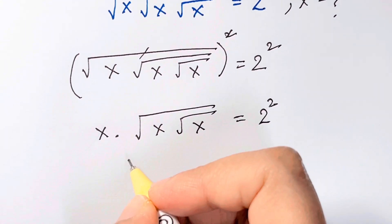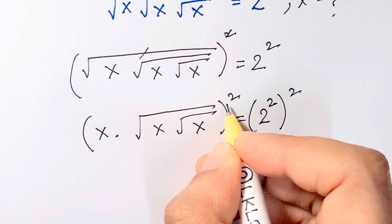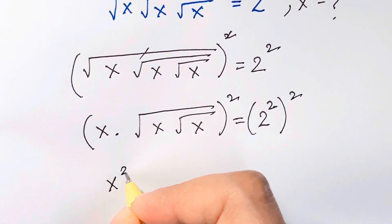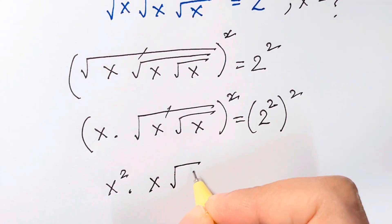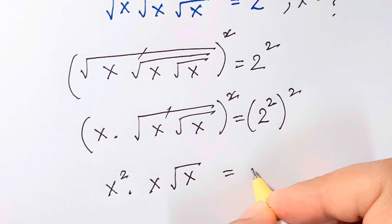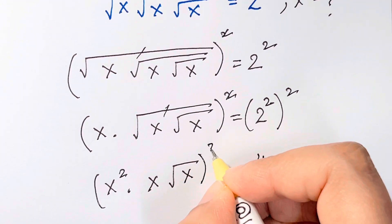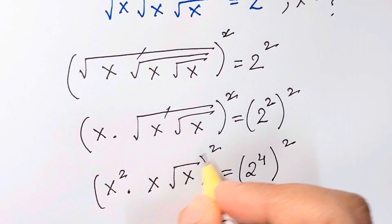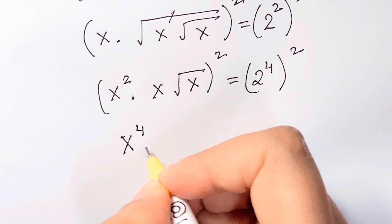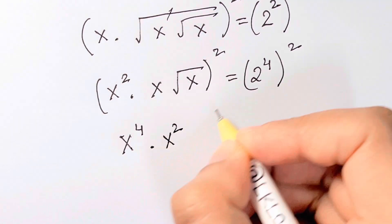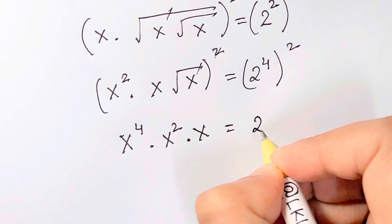I'm going to square both sides again. Now x squared times root and square cancel, leaving x times root x equal to 2 to the power of 4. Squaring again, x to the power of 4 times x squared, and the root and square cancel, leaving x equal to 2 to the power of 8.